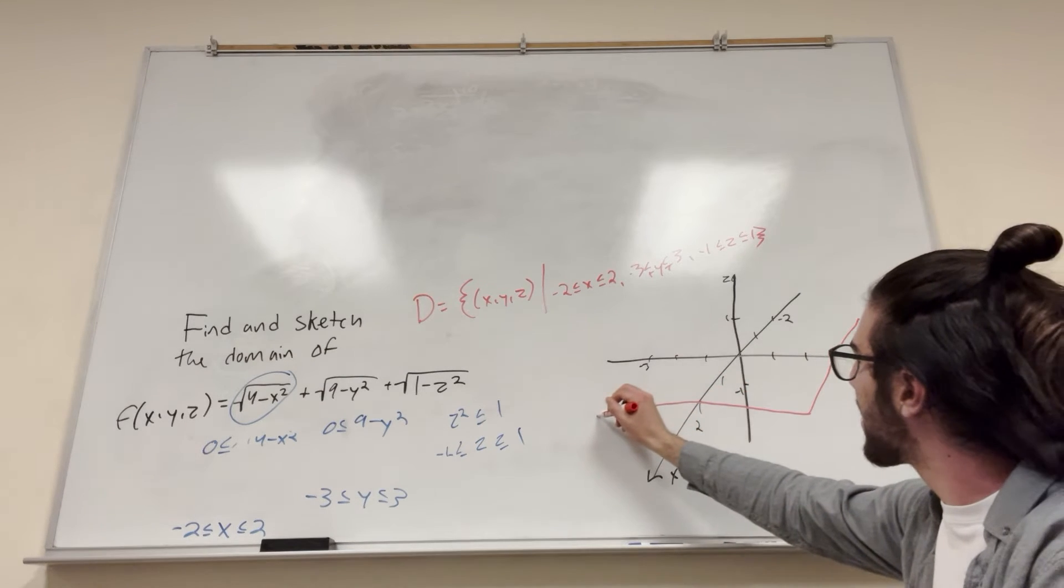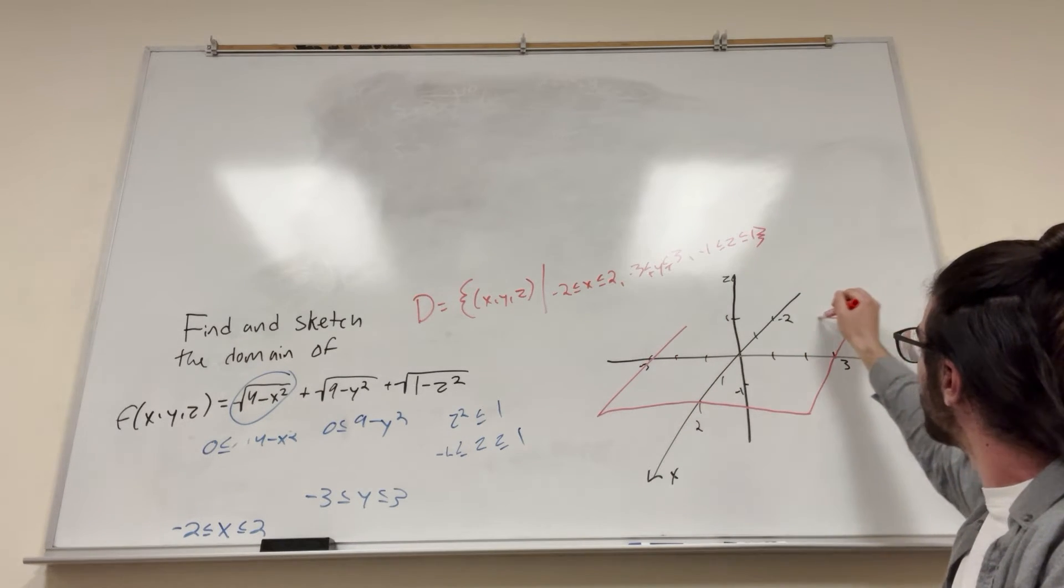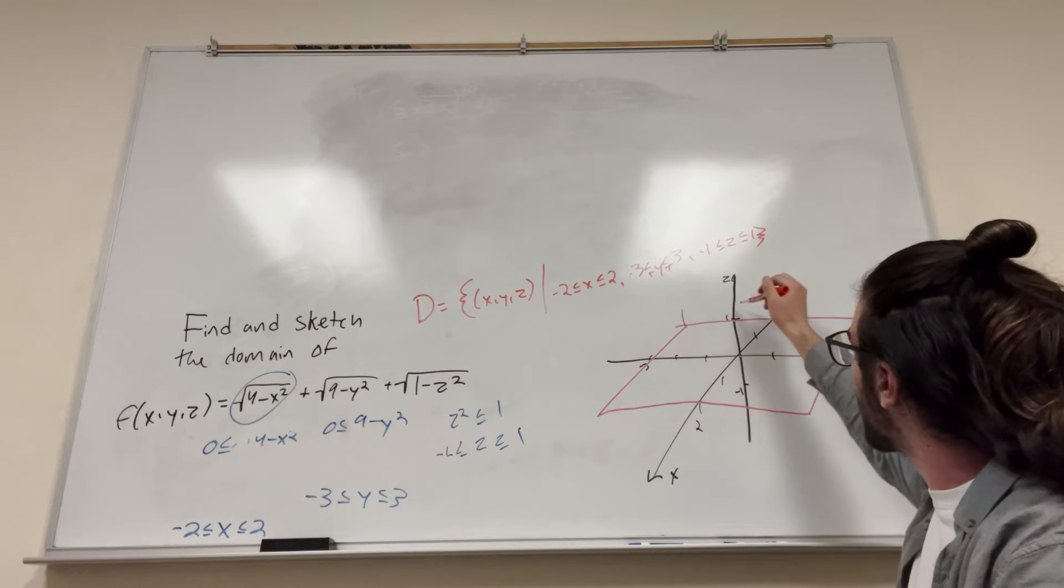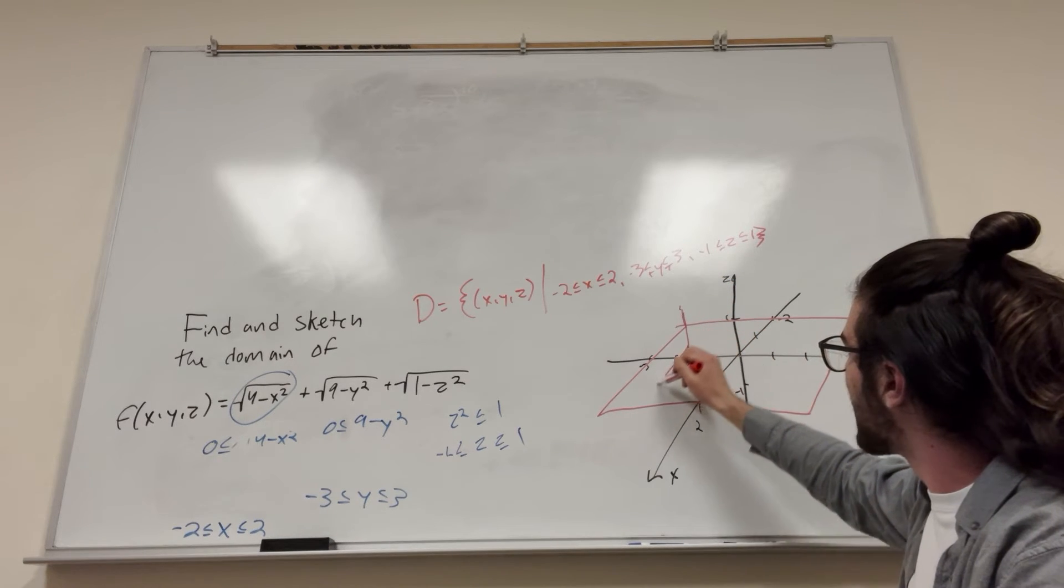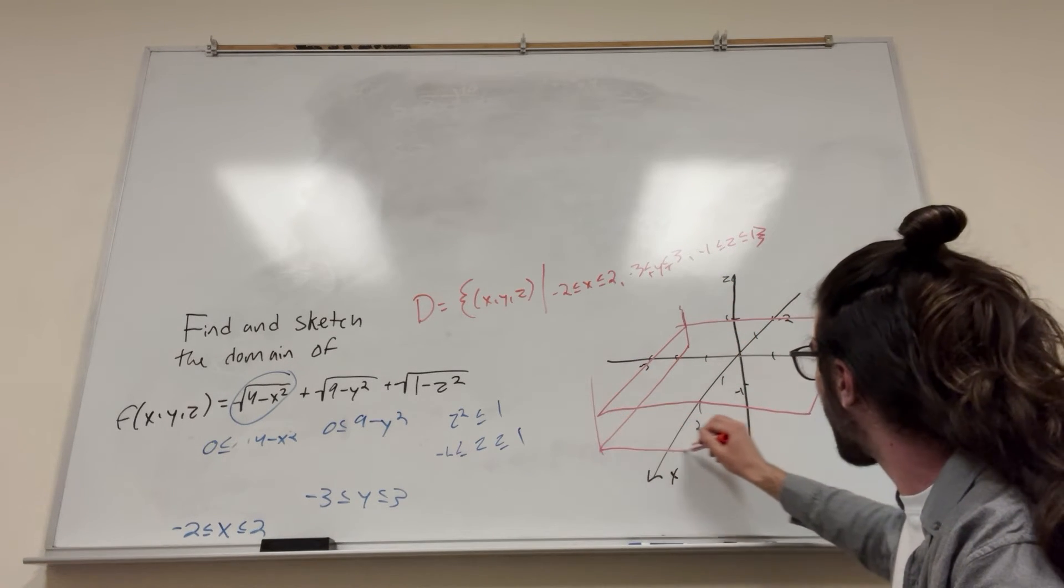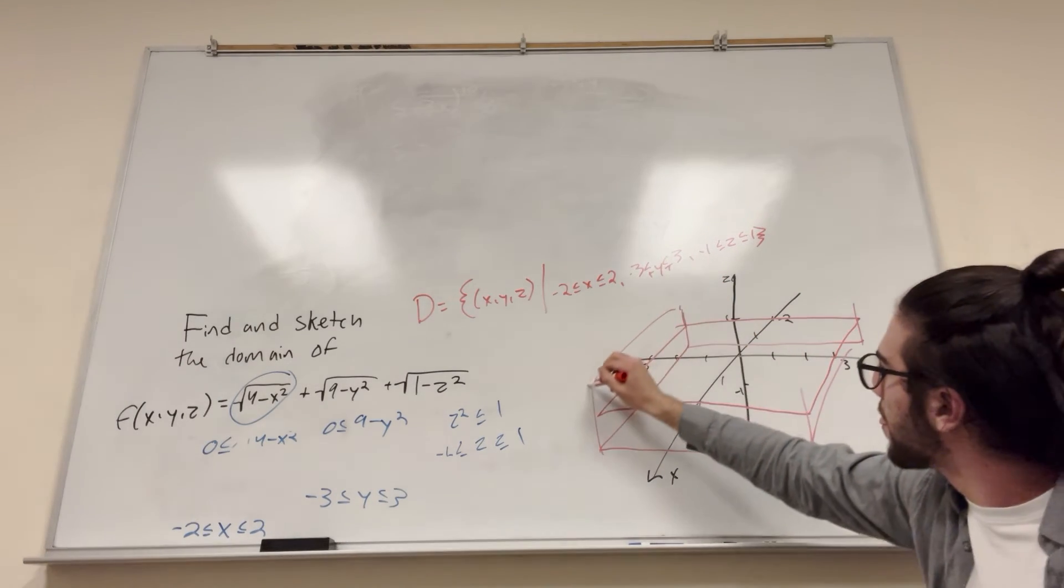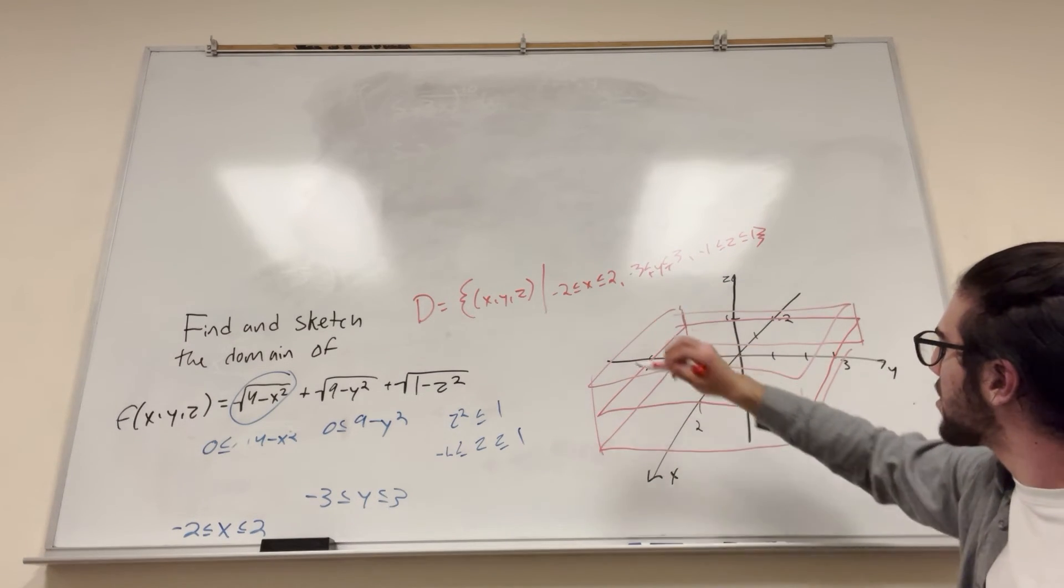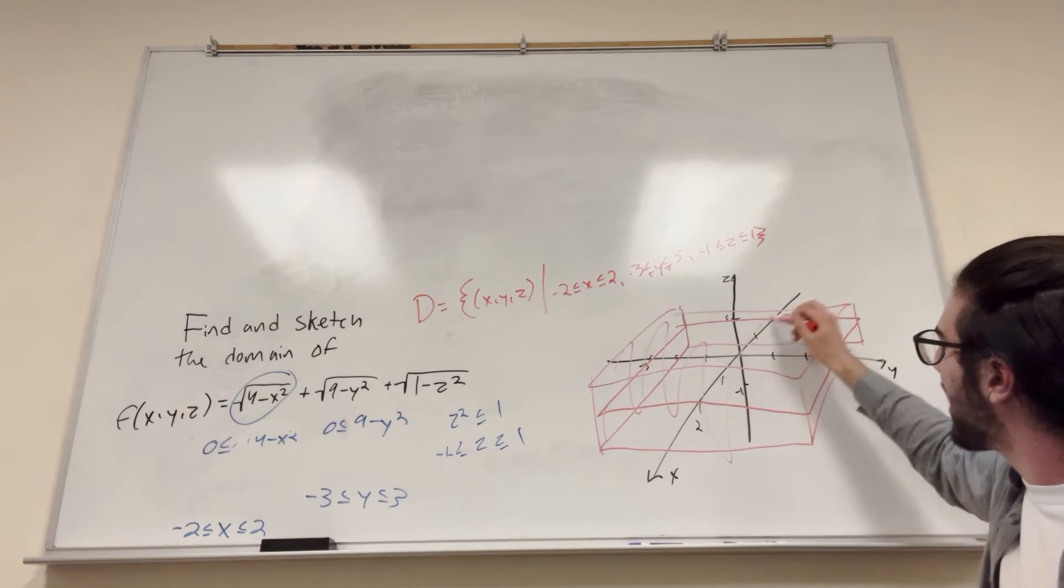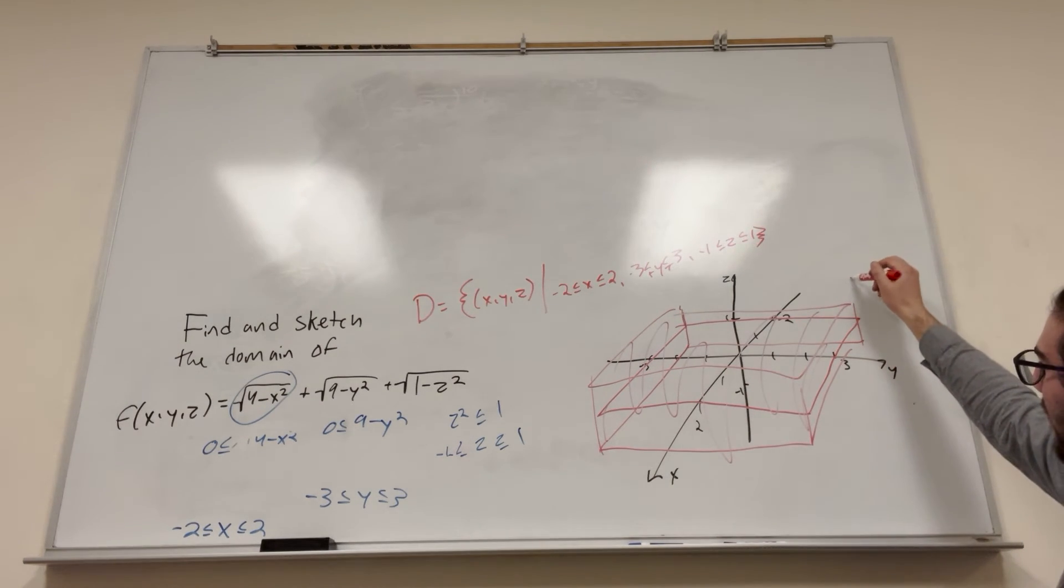This is going to be a really crude drawing, but you're going to get the point of it. Boom. And then this goes up to one and then down to negative one. So it's going to be like a box. And that's our domain. It's the inside of this. So you probably want to shade this. That's the domain right there.